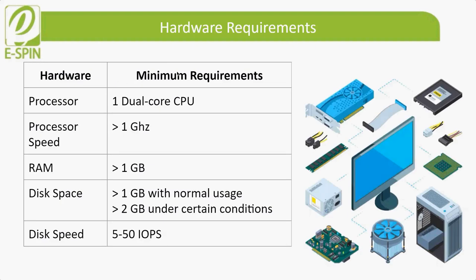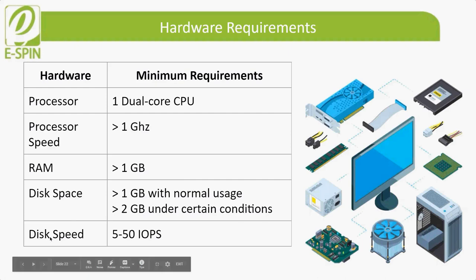The minimum recommended operating requirements for Nessus Agent are: one dual-core CPU, processor speed greater than 1 GHz, RAM greater than 1 GB, disk space of 1 GB under normal usage and more than 2 GB under certain conditions, and disk speed of 5 to 50 IOPS.